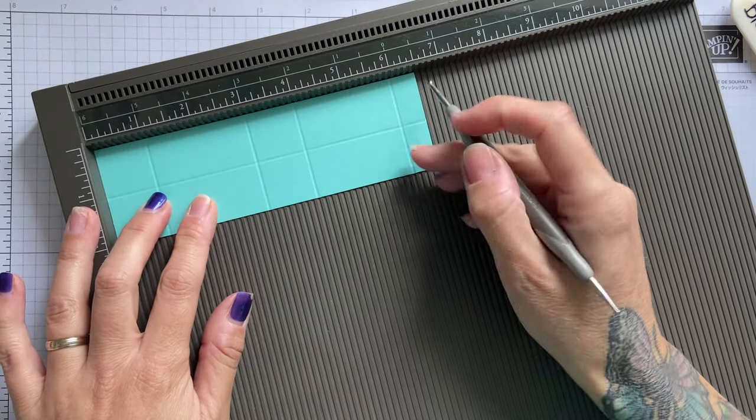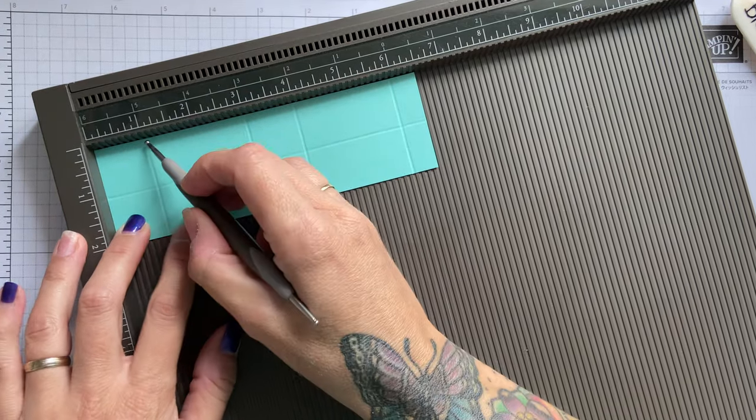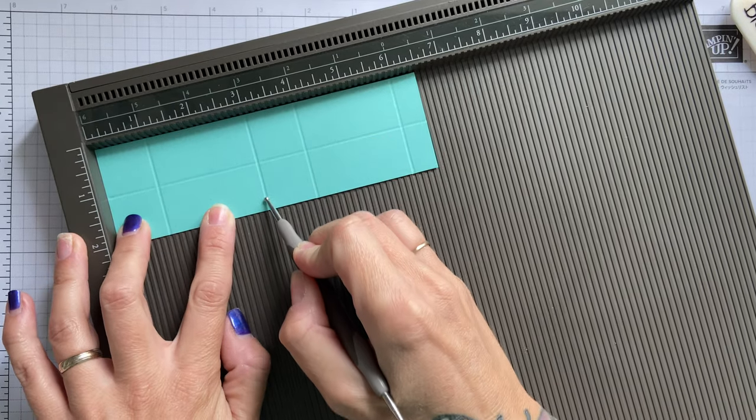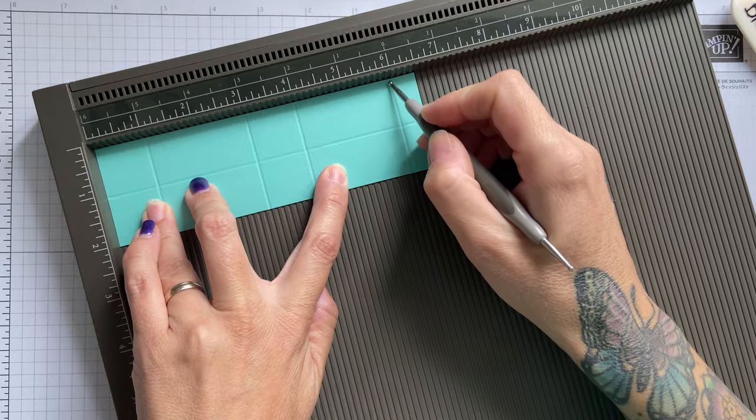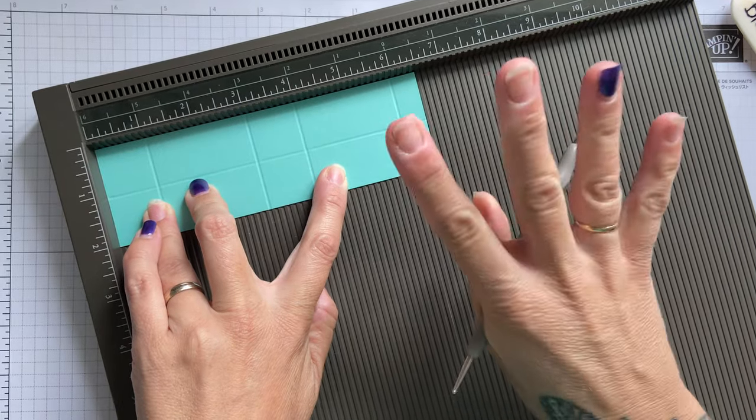Then on the 6½ inch side, you want to score at 1, 3, 4, and 6. And that's it.